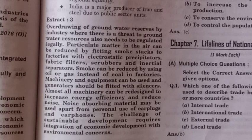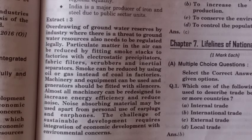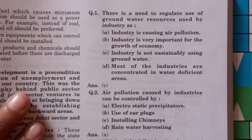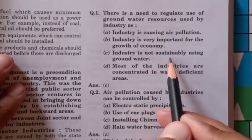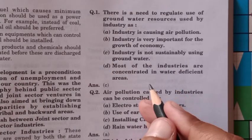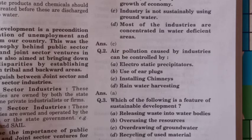In this extract, the main focus is on how we can control the different kinds of pollution produced by industries — whether water pollution, noise pollution, air pollution, or thermal pollution. Question: there is a need to regulate groundwater resource use by industry because industries are using water resources in an indiscriminate way — over-using and polluting them — hence legal regulation is needed.